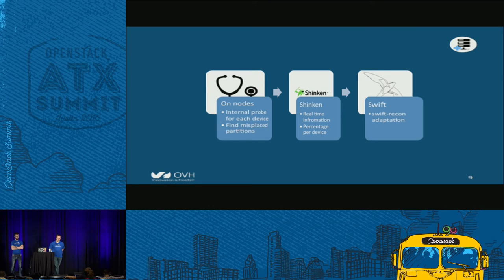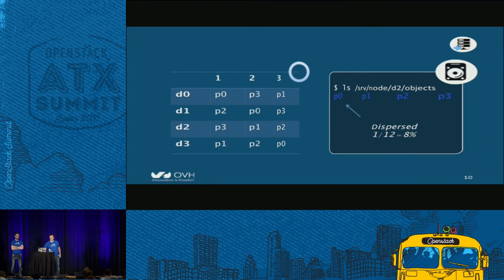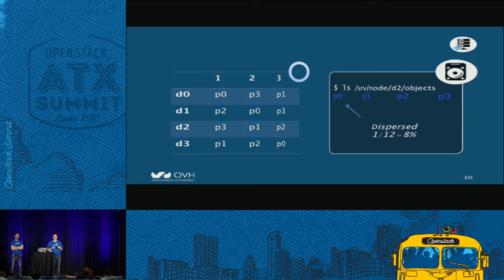We also get graphs of the evolution of dispersion on each device. This information is collected on the Swift proxies using an adapted version of Swift recon middleware and a command line interface. Dispersion is when data is not where it is supposed to be. Each time you rebalance your ring to add devices, you create dispersion because you ask Swift to move data from one device to another — but moving data is not immediate, as it may be gigabytes or terabytes. Also, if a disk is down, Swift will write data temporarily on the backup device, which is called the handoff device. This is also dispersion.